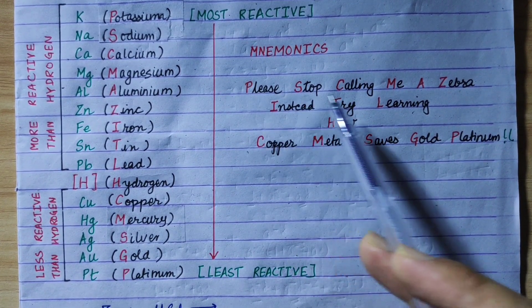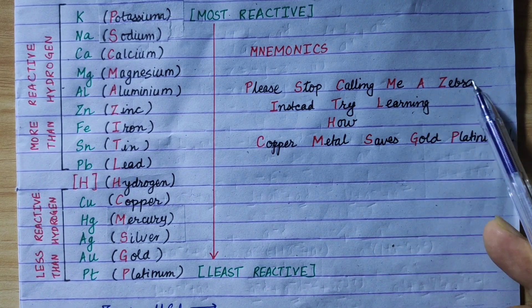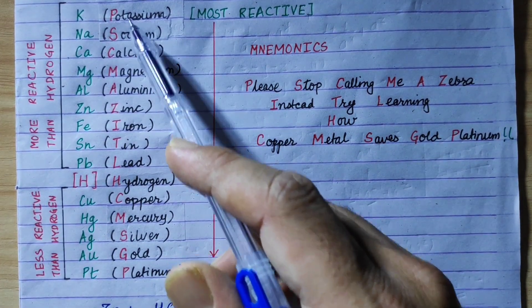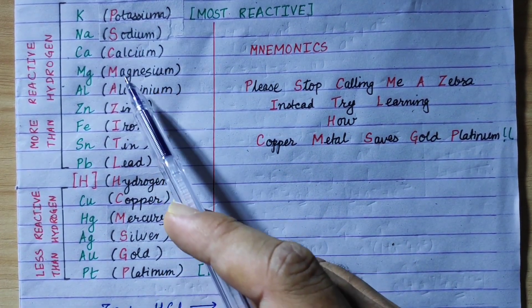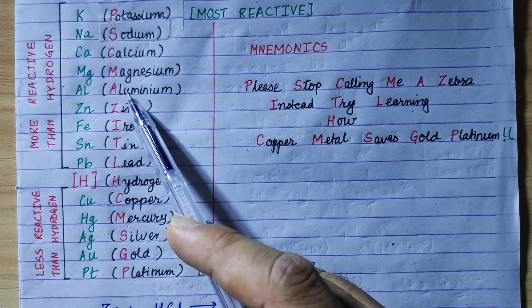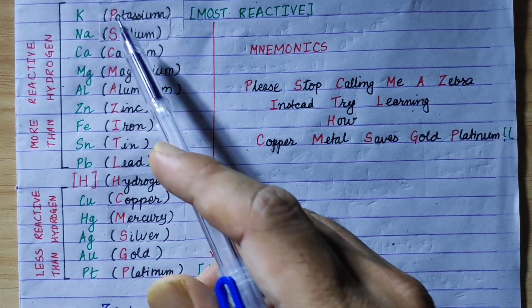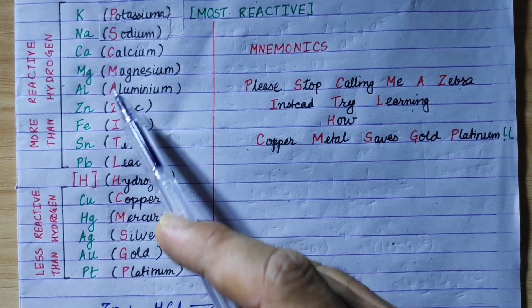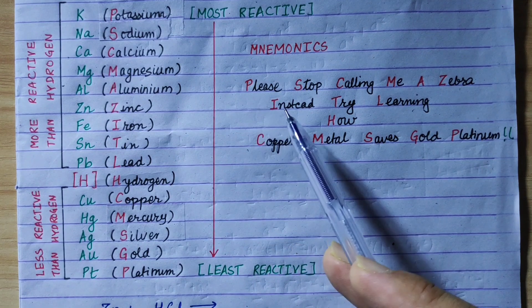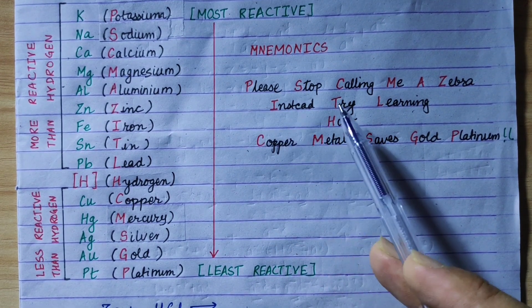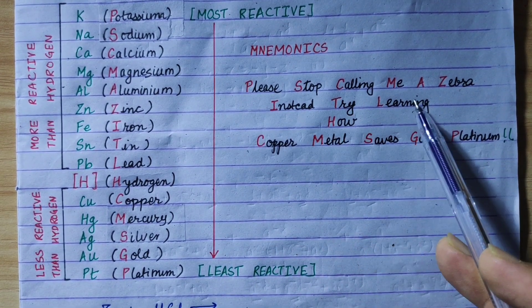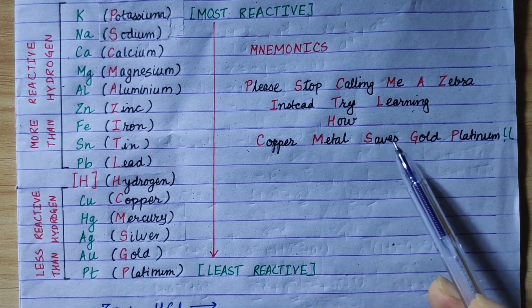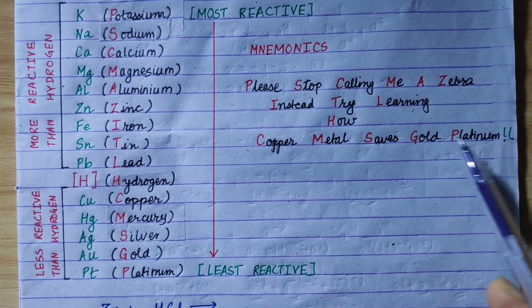The mnemonic for Potassium, Sodium, Calcium, Magnesium, Aluminium, Zinc is: "Please Stop Calling Me A Zebra." Then, try learning how Copper Metal Saves Gold and Platinum.